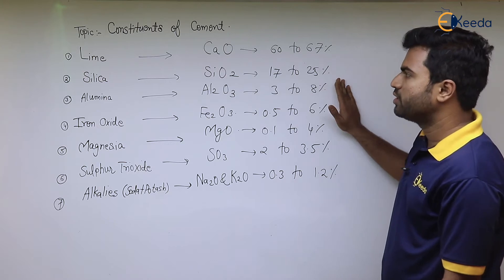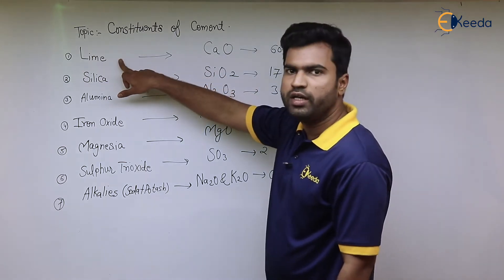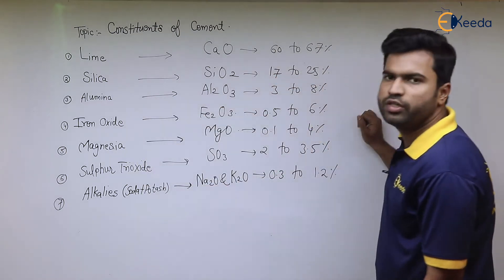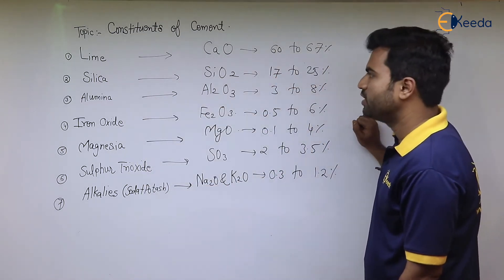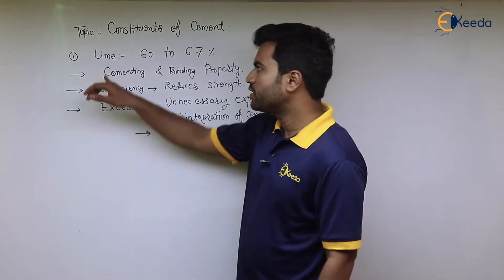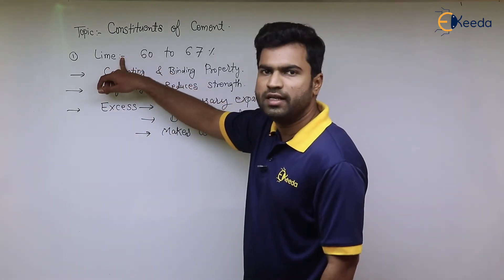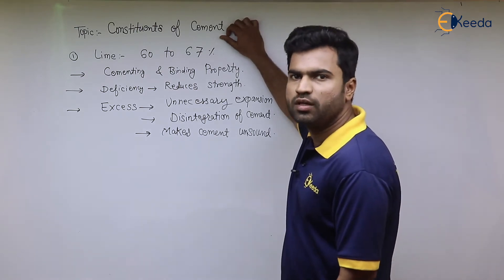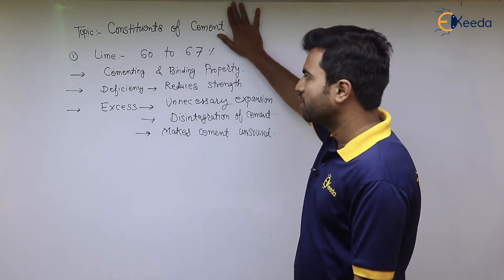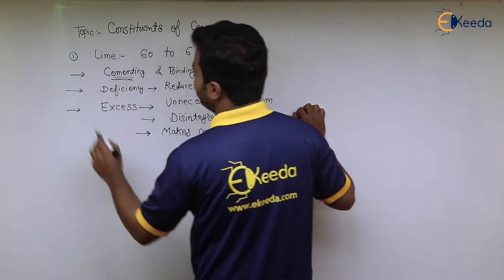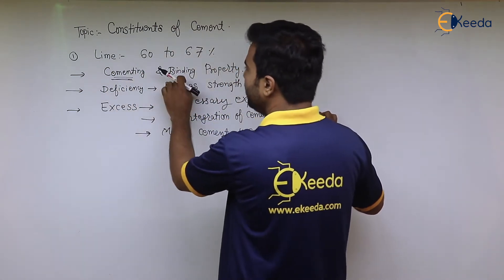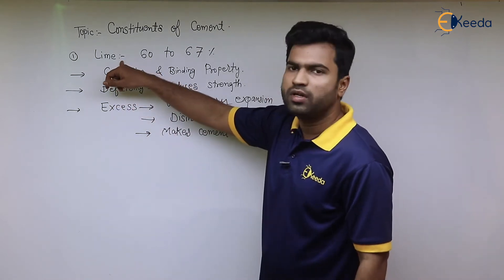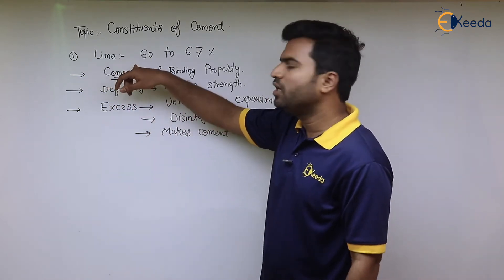Now we will see the various functions of all the constituents — why lime is included, why silica is added, why alumina is added. The first constituent, lime, has 60 to 67 percent in cement. Its main function is that it has cementing and binding properties; it gives the cement binding properties for binding various materials in concrete.